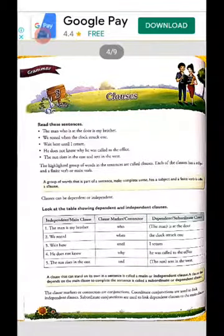Clause means the group of words and part of a sentence which can or cannot indicate its meaning on its own. That part of a sentence is known as a clause. Here, we read these sentences: 'The man who is at the door is my brother.' 'We rested when the clock struck one.' 'Wait here until I return.' 'He does not know why he was called to the office.' 'The sun rises in the east and sets in the west.'